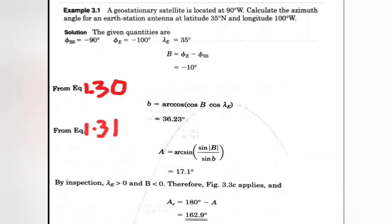Problem: A geostationary satellite is located at 90° West. Calculate the azimuth angle for an earth station antenna at latitude 35° North and longitude 100° West. The azimuth angle is asked. The given values are: phi_ss = -90°, lambda_e = -100°, and lambda = 35°.